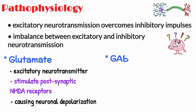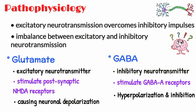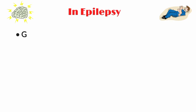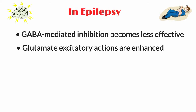The primary inhibitory neurotransmitter GABA opposes excitation by stimulating GABA receptors, causing hyperpolarization and inhibition of the postsynaptic cell membrane. In epilepsy, GABA-mediated inhibition becomes less effective, while glutamate excitatory actions are enhanced.